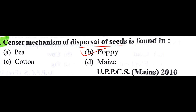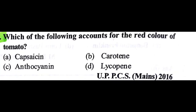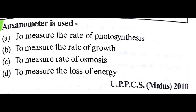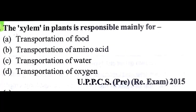The mechanism of dispersal of seeds is found in poppy seeds — answer is B. Which of the following accounts for the red color of tomato? The answer is D: lycopene. Auxanometer is used to measure the rate of growth in plants — answer is B. Xylem is used for transportation of water — answer is C — and phloem is responsible for transportation of food.